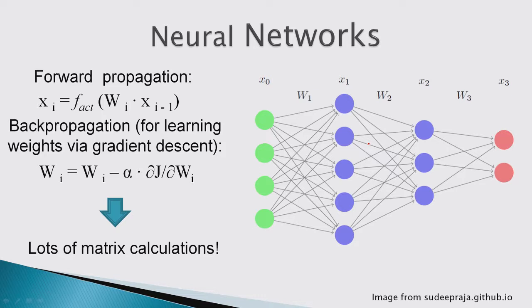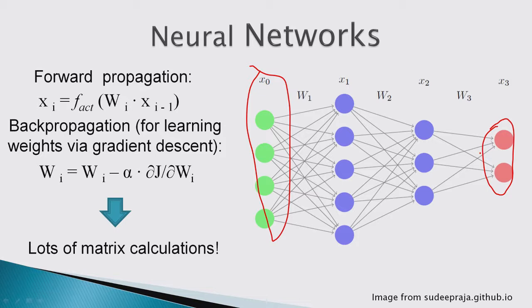I'll start with neural networks in general. You have inputs and outputs, and everything between them is the hidden layers. In a regular neural network, every neuron in the hidden layer is connected to every input, and every neuron in the next layer is connected to every neuron in the previous layer. These are called dense or fully connected layers.